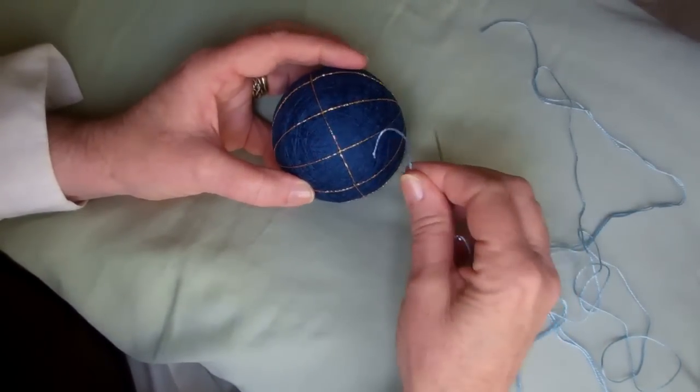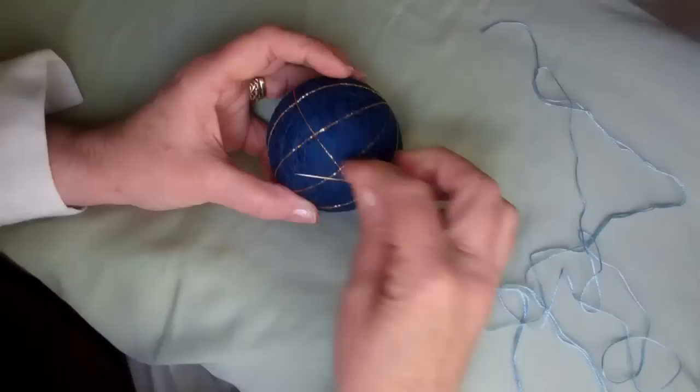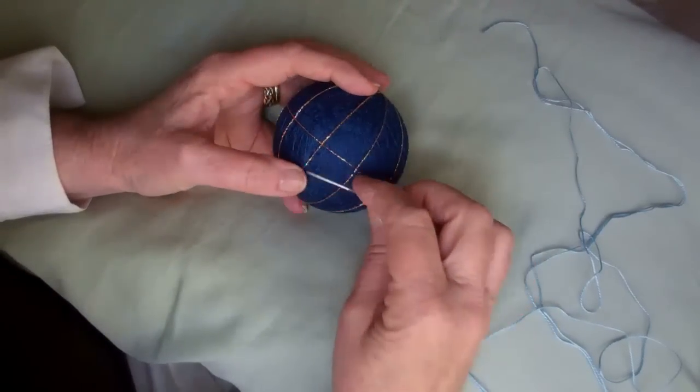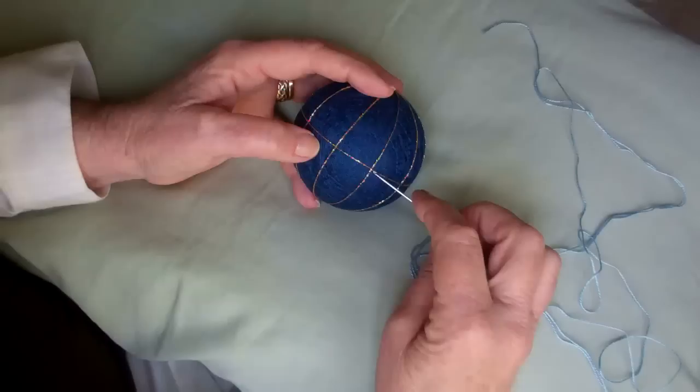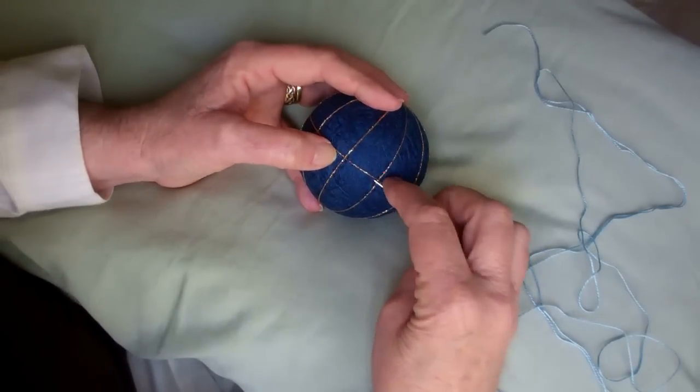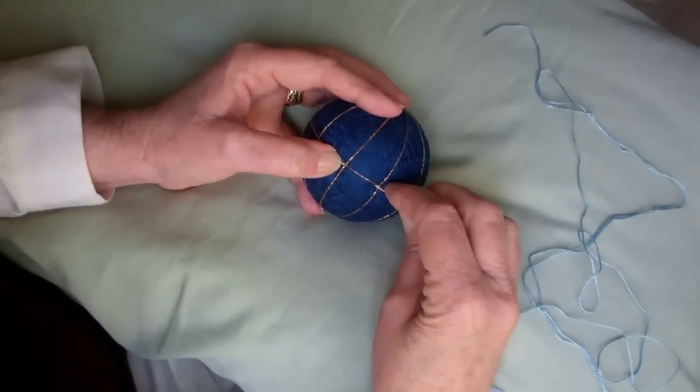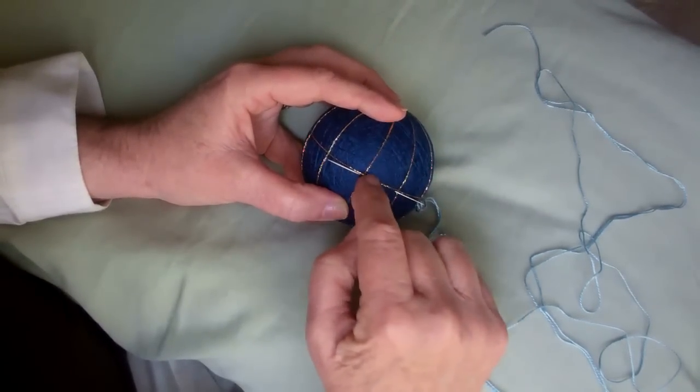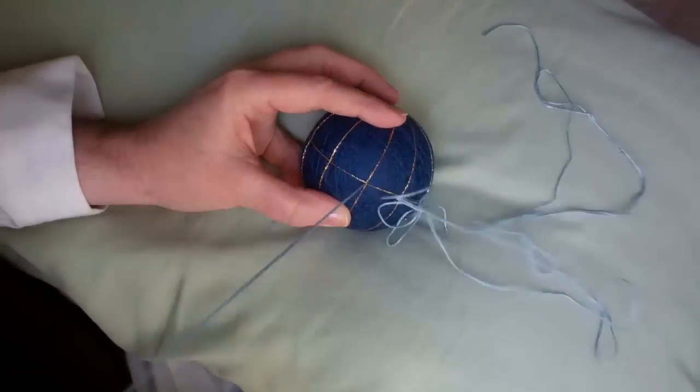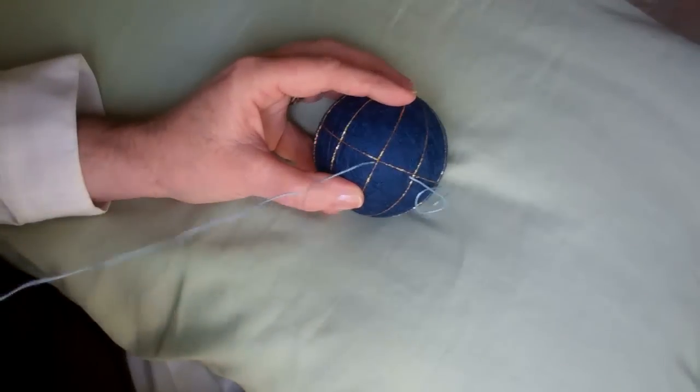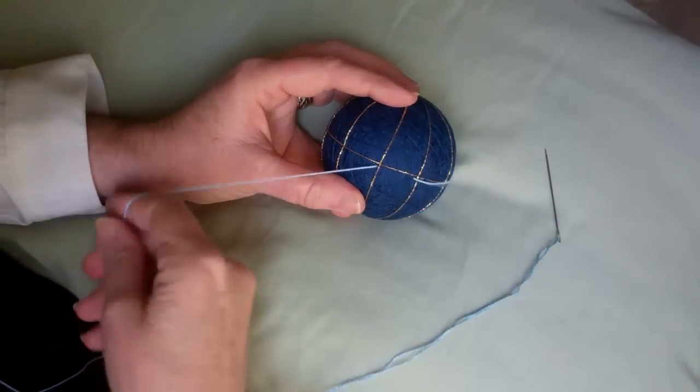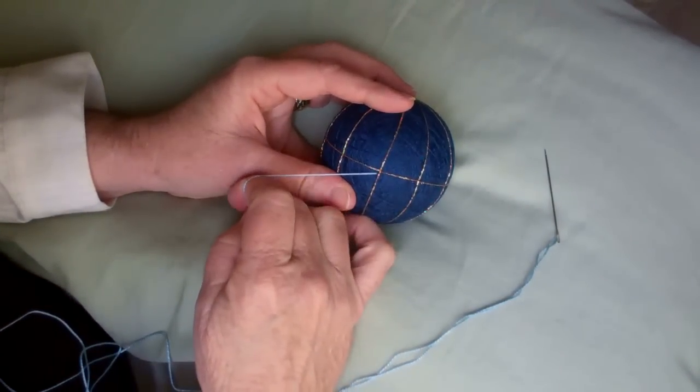When I'm doing wrap bands, I like to put a knot in the end because there will be a really long length without anything attached to the ball. So I enter the ball about an inch away from my starting point. I'm going to start right next to the equator line and close to a vertical guideline.